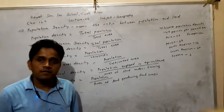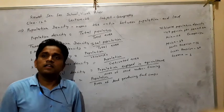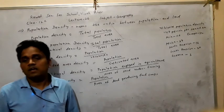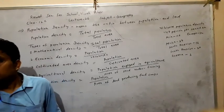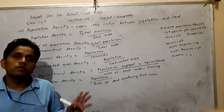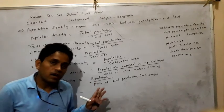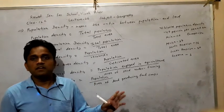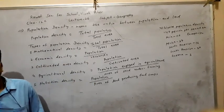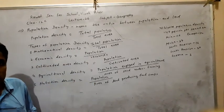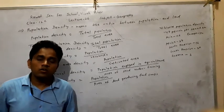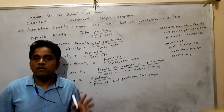Population density is also found uneven in the world. Where there are favorable conditions for living, suitable conditions exist where population density is found high, like the river valley region. Where there are unsuitable conditions — such as hot regions and very cold regions — population density is found very low.